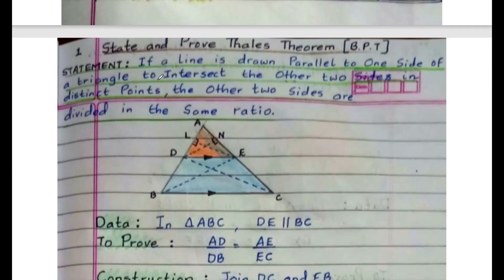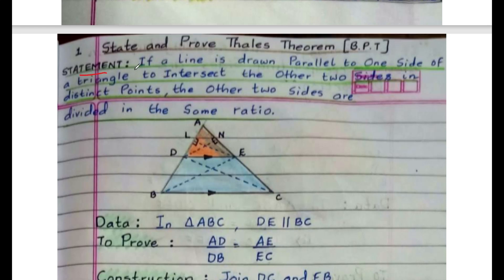Next, state and prove Thales theorem — an important 5-mark theorem. What I expect is Thales theorem and Pythagoras theorem, but as per resource teachers, areas of similar triangles is also very important. So don't take risk — learn state and prove Thales theorem, state and prove Pythagoras theorem, and also areas related to similar triangles. The statement of Thales theorem is: if a line is drawn parallel to one side of a triangle to intersect the other two sides at distinct points, the other two sides are divided in the same ratio.